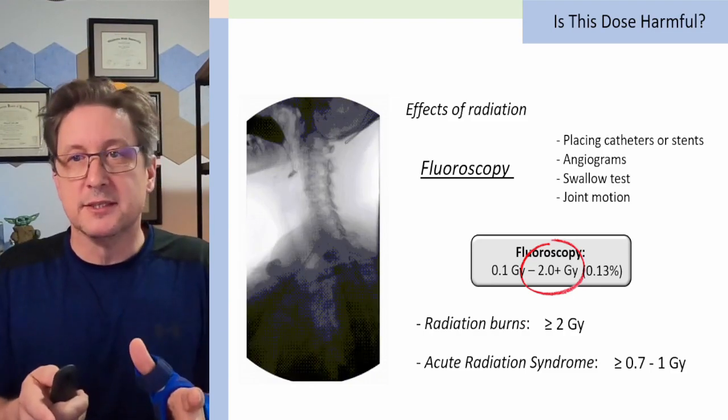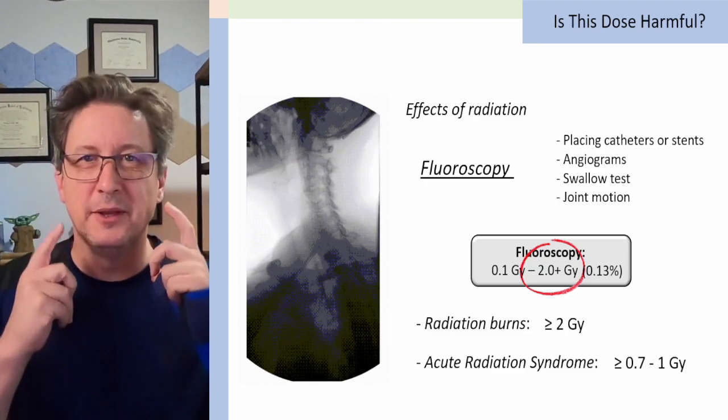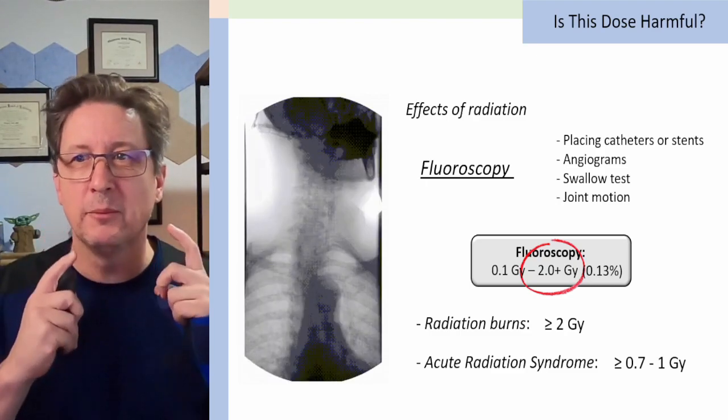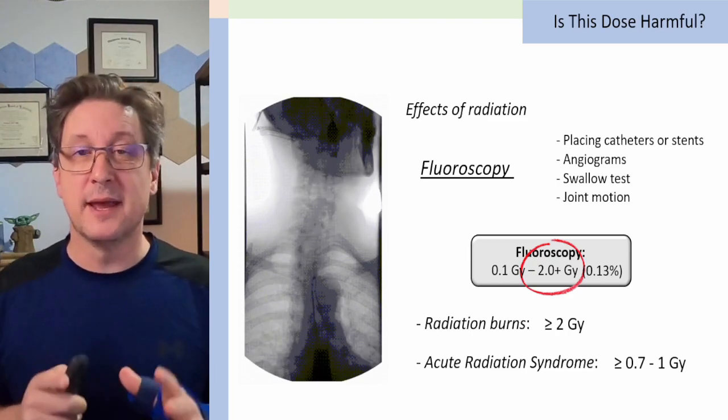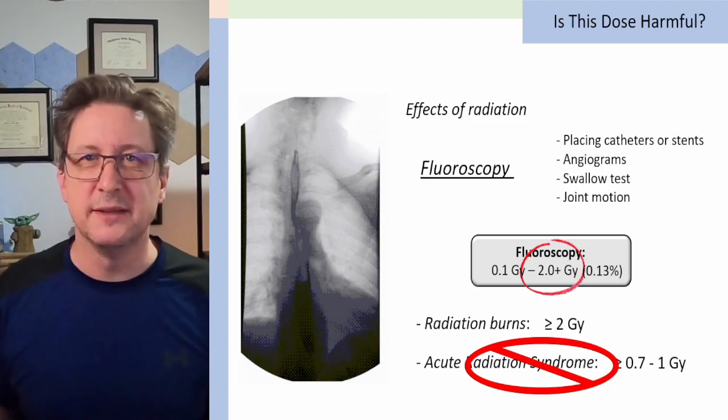Acute radiation syndrome. Now, you need a whole body dose, really, to see this type of syndrome. And when they do fluoroscopy, they're only imaging one small part of your body. So I don't think we ever get to that whole body threshold for any type of fluoroscopy. So you won't see that, I don't think.